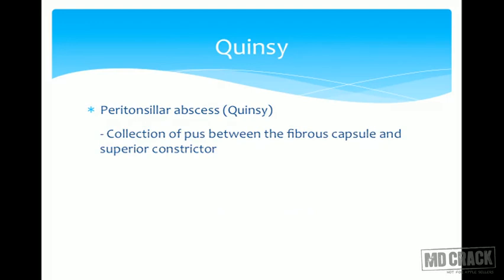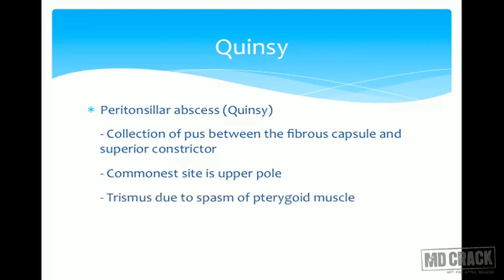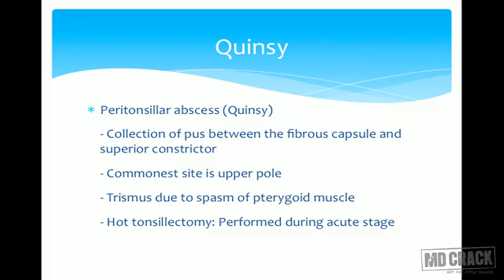Quinsy, also known as peritonsillar abscess, is the collection of pus between the fibrous capsule and the superior constrictor muscle, most commonly at the upper pole of the tonsil. There is trismus due to pterygoid muscle spasm. Hot tonsillectomy is performed in the acute stage; interval tonsillectomy is performed after six weeks once the acute attack subsides.